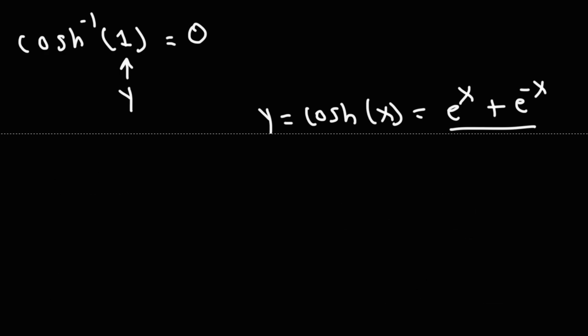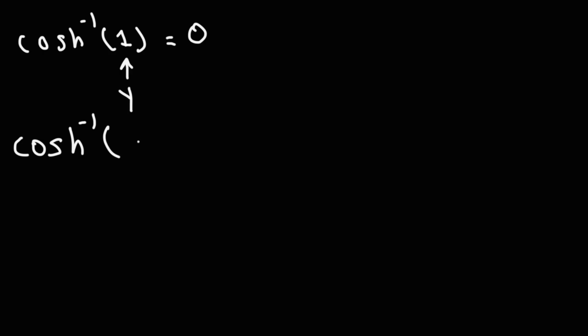But fortunately, there are formulas that we could use to evaluate the inverse hyperbolic functions. So here's the formula for the inverse hyperbolic cosine function. It's equal to the natural log of x plus the square root of x squared minus 1.